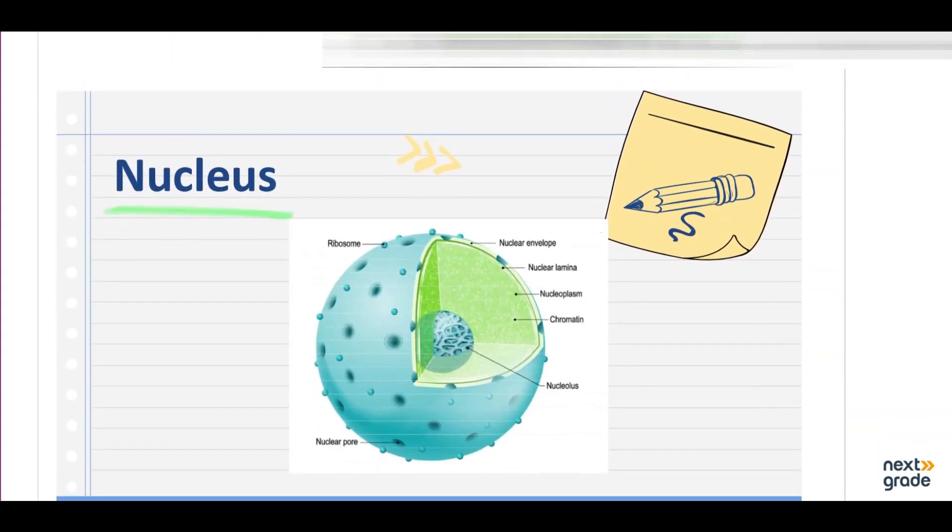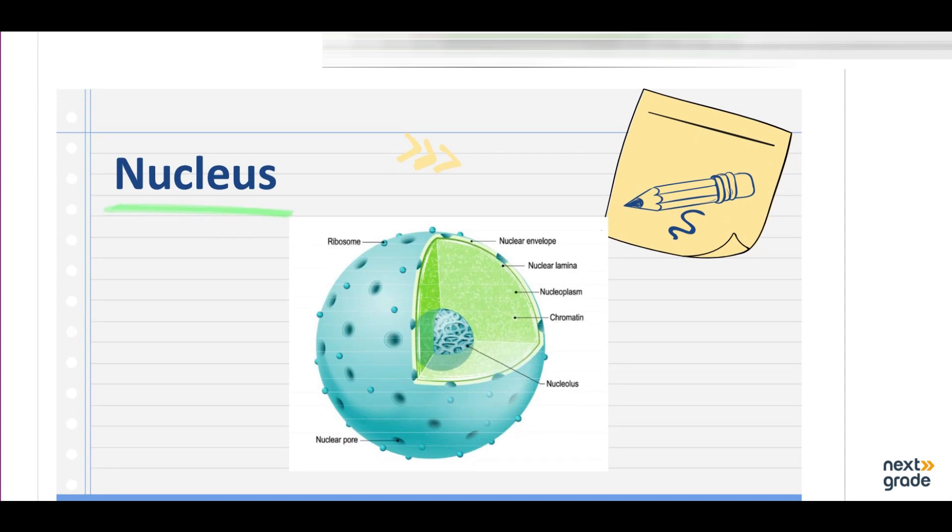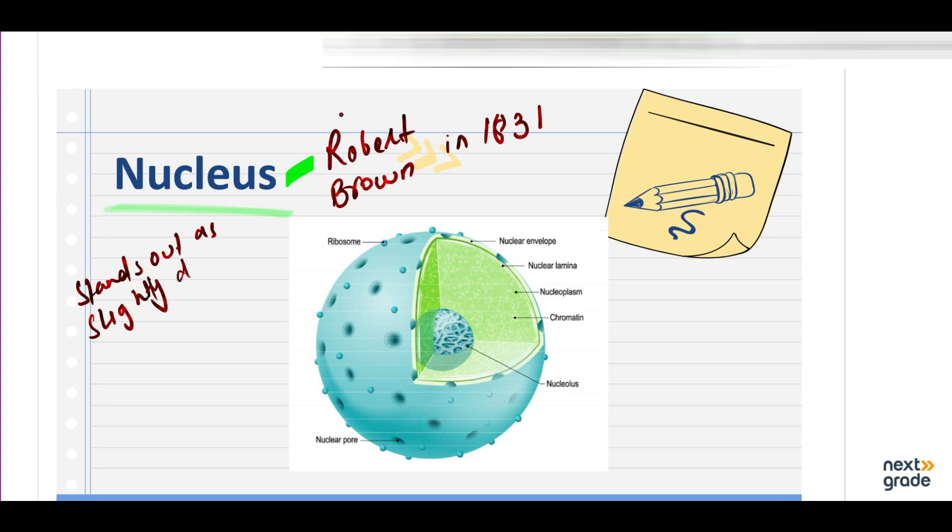The nucleus, as we know, the presence of the nucleus of the cell was first reported by Robert Brown in 1831. Its early discovery was undoubtedly due to its prominence in many cells, where it stands out as slightly darker than the surrounding cytoplasm.